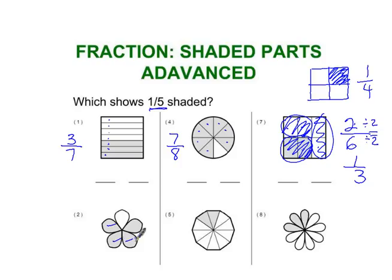This next one has one, two, three, four. Four out of five. That's close because we have fifths, but it's four out of five, not one out of five.